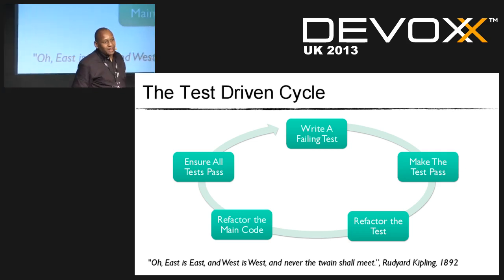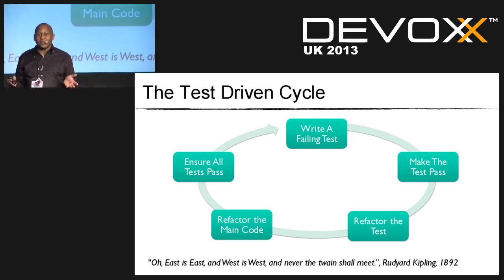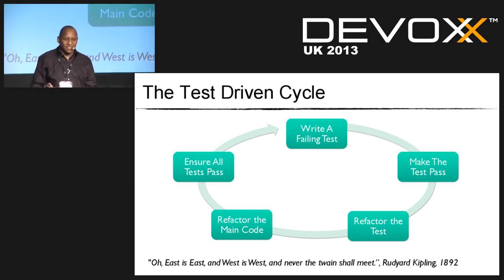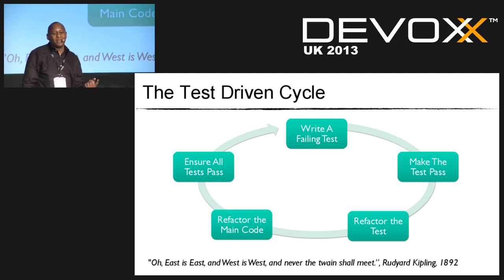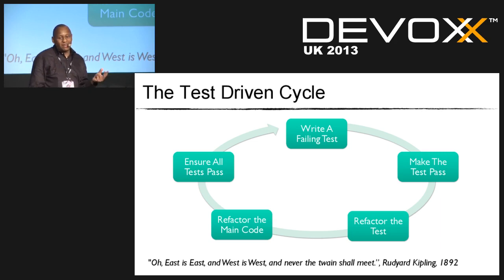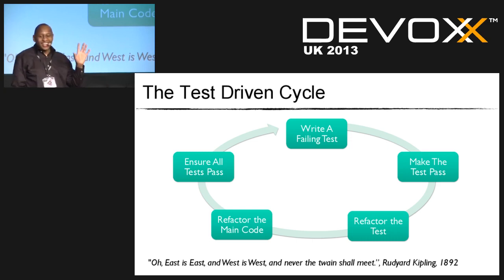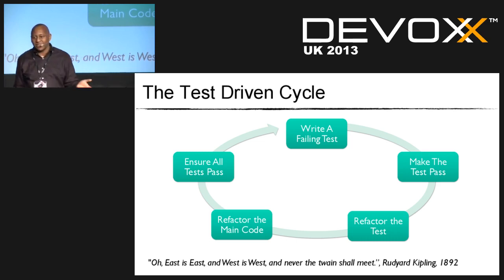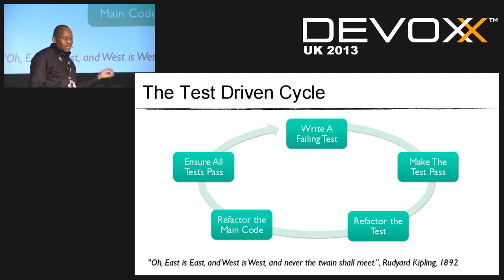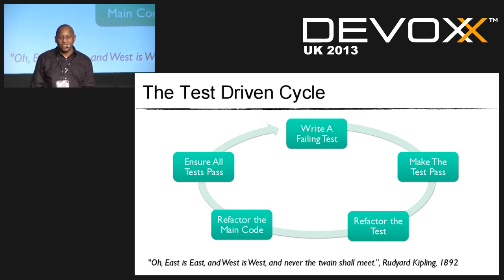The essentials of testing are the three A's: Assign, Act, and Assert. When we Assign, we create our objects and build a dependency graph — bring objects to life, a la Spring. Then we test the behavior — we invoke some behavior, we Act. Then we Assert: do our actual results meet the expected results?